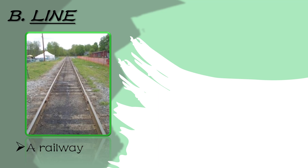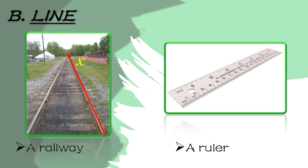Ano naman yung mga bagay na nagre-represent sa line? So for example, this is called a railway — yung dinadaanan ng mga tren. Yung side na ito ng railway ay nagre-represent ng line. So pangalanan natin ang line na yan as line X. Another is the ruler. Ang side na ito ng ruler ay halimbawa din ng line, and then pwede natin siyang pangalanan as line M.